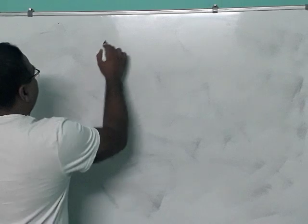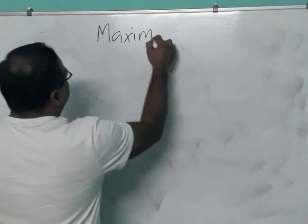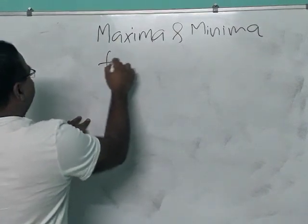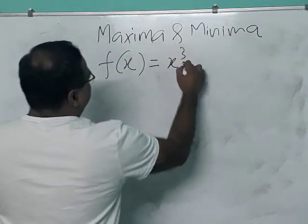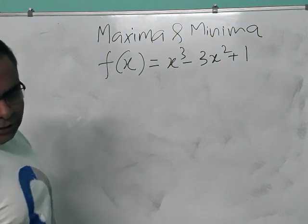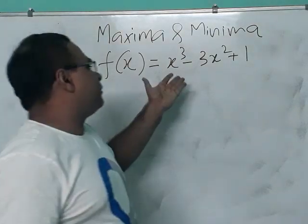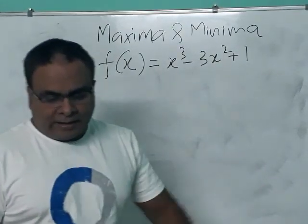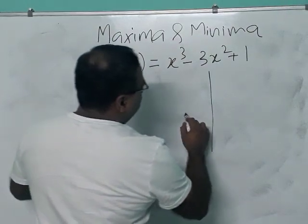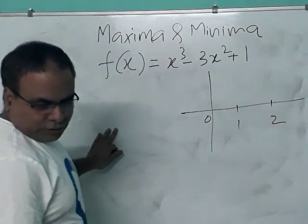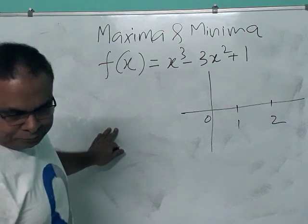You have a function f(x) = x³ - 3x² + 1. This is a third degree polynomial — degree means the highest power of x. When you plot the graph of this polynomial, it will be something like this, with points at 0, 1, and 2.